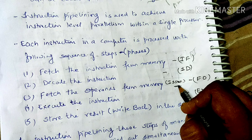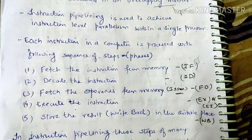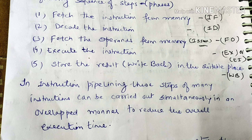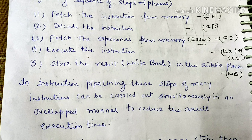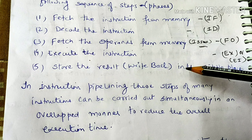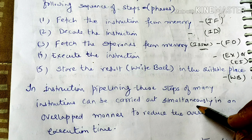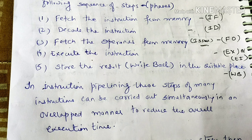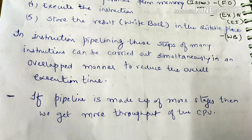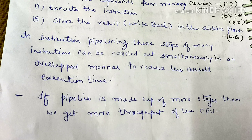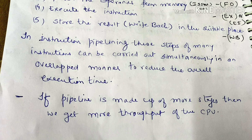In instruction pipelining, these steps of many instructions can be carried out simultaneously in an overlapped manner to reduce the overall execution time. If the pipeline is made up of more stages, we get more throughput from the CPU — so the more stages in pipelining, the more throughput from the CPU.